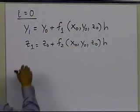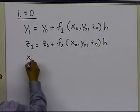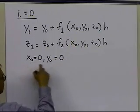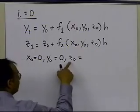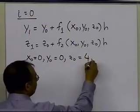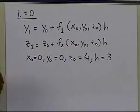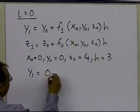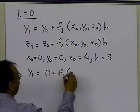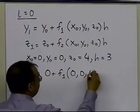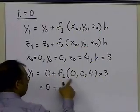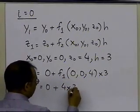We know that x0 is 0, y0 is 0 (the value of y at x=0), z0 is 4 (the assumed value of the derivative of y at x=0), and h equal to 3 (the step size). Since f1 is nothing but z, we get y1 equal to 0 plus f1(0, 0, 4) times 3, which is z=4 times 3, giving y1 equal to 12.